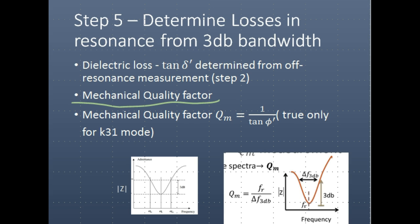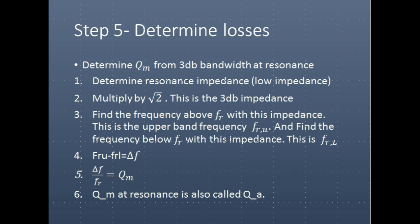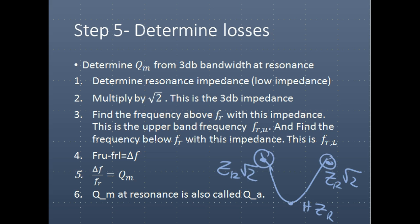The mechanical quality factor results in amplification of vibration, or an amplification of strain, in the resonance condition. The way you measure it is by doing this process: How do you measure the quality factor at resonance? The quality factor is measured by the 3 dB bandwidth. First you determine your resonance impedance, which is your lowest impedance value. You multiply that value by the square root of 2 — this is the 3 dB impedance. So you can imagine we have our resonance frequency here, with some certain value Zr, and then another impedance value Zr times square root of 2.